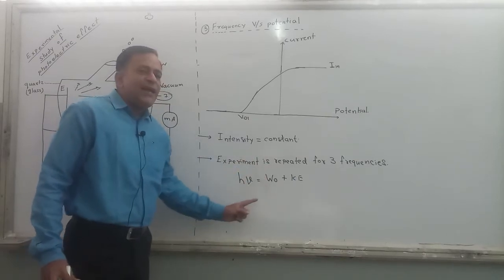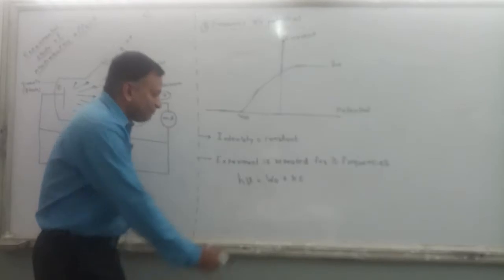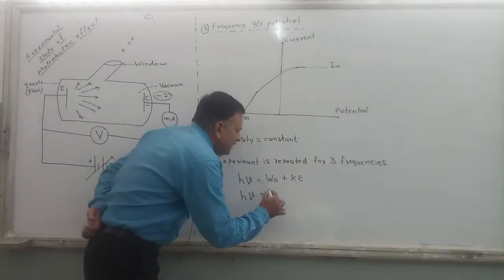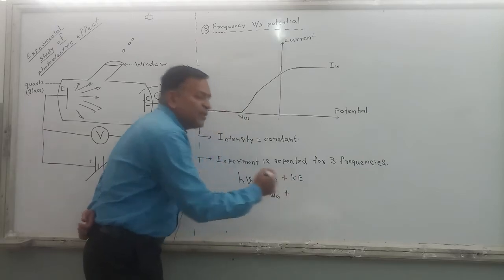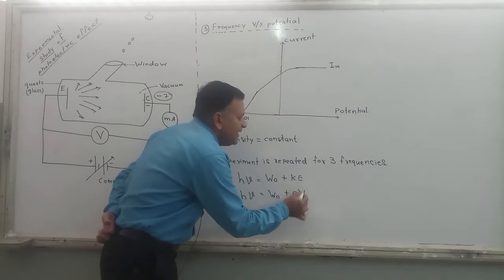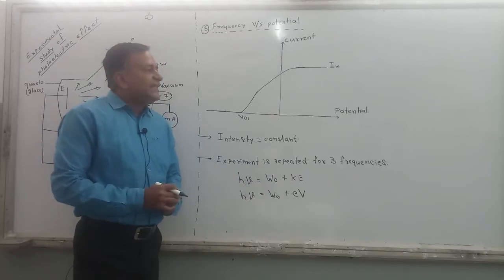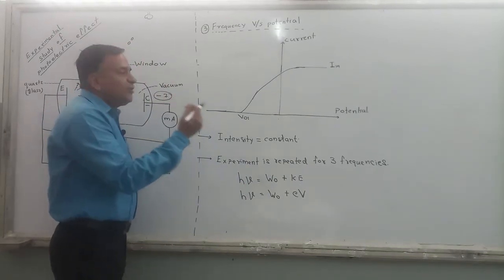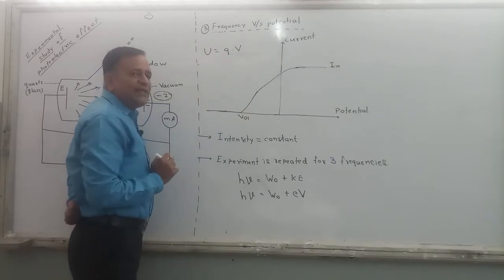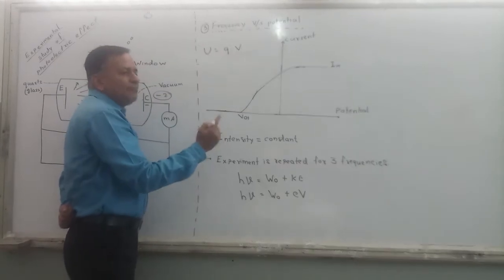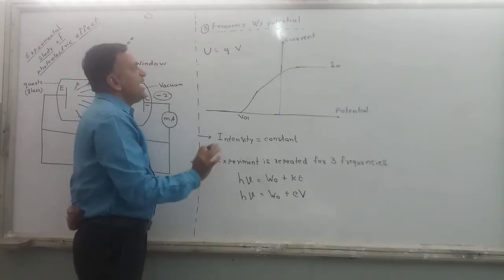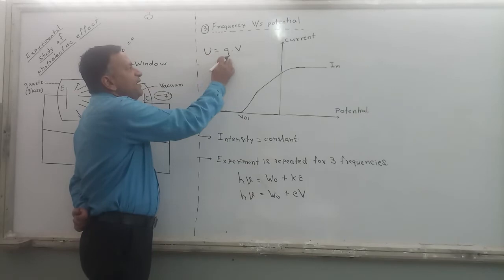Now I am going to change this equation a little bit. The energy of the photon remains H nu. Work function remains W₀, plus instead of kinetic energy, I am writing EV — electron volt. I have written the kinetic energy as electron volt. According to electrostatics, the potential energy of any charge is given as Q into V. That means if you put a charge Q in between a potential difference V, then the energy of that charge becomes Q into V.